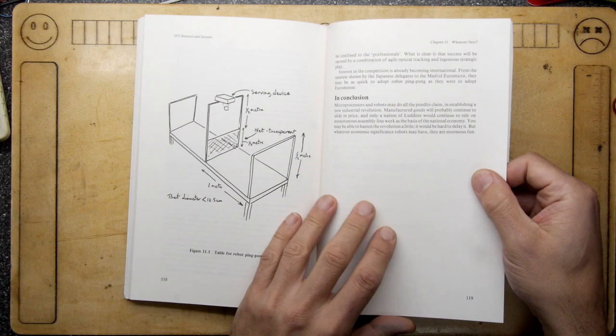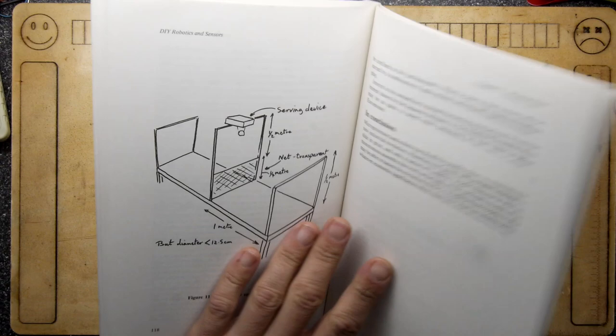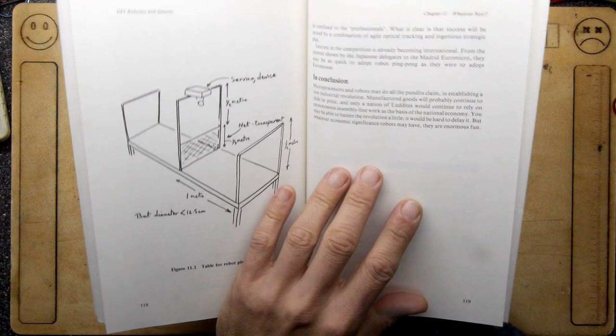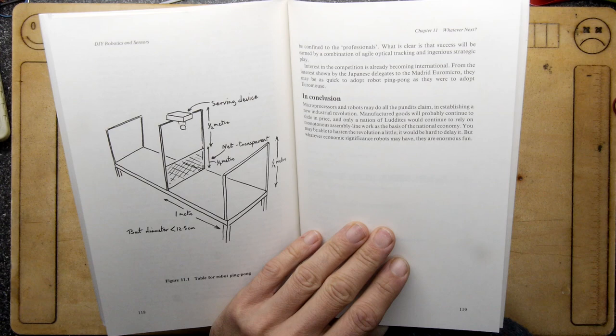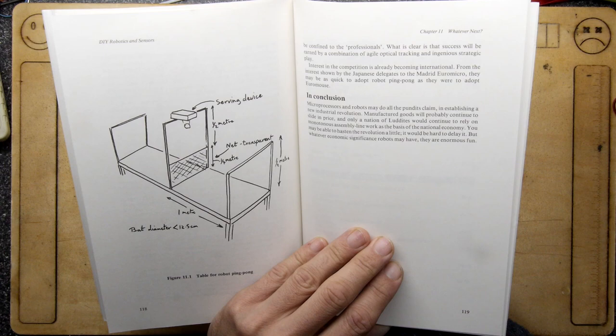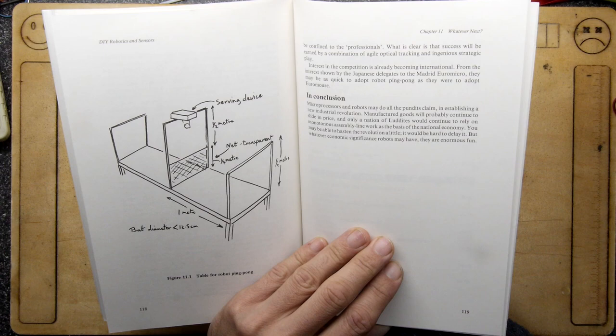Look at that, there's a conclusion. Shall we read the conclusion together? Microprocessors and robots may do all the pundits claim in establishing a new industrial revolution. Manufactured goods will probably continue to slide in price and only a nation of Luddites would continue to rely on monotonous assembly line work as the basis of the national economy. You may be able to hasten the revolution a little and it would be hard to delay it, but whatever economic significance robots may have, they are enormous fun. Hear hear Don John, catch you later.